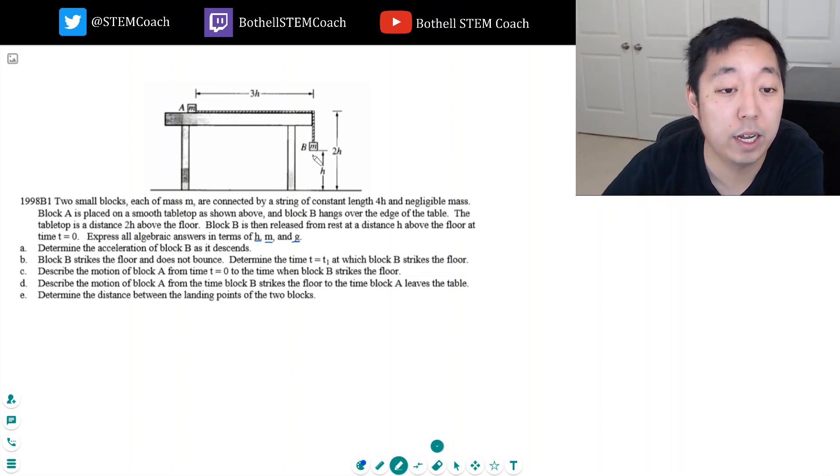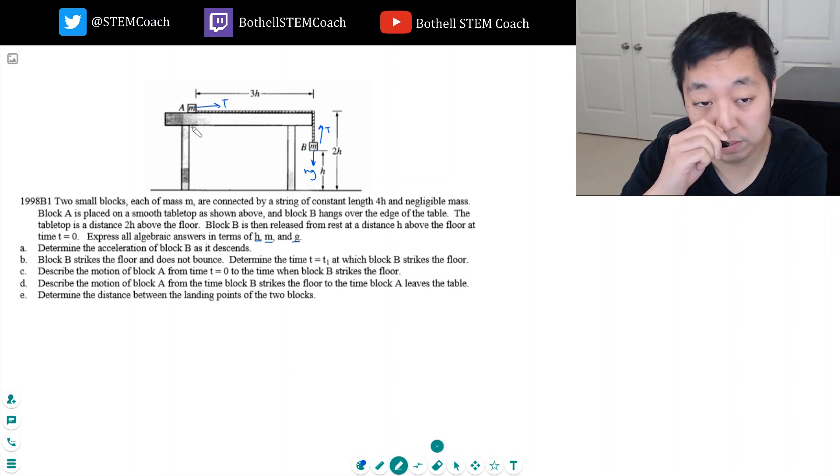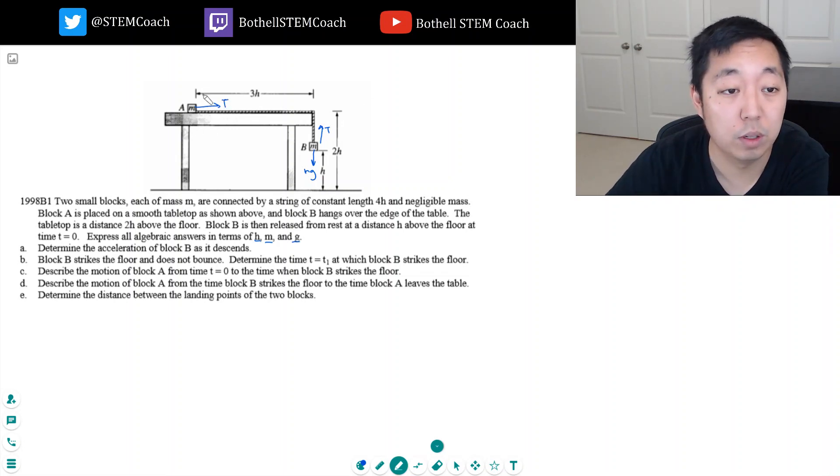So, free body diagram on block B: I have MG going down, I have tension pulling up on this rope. This guy, I got tension pulling on this rope, and that's it.